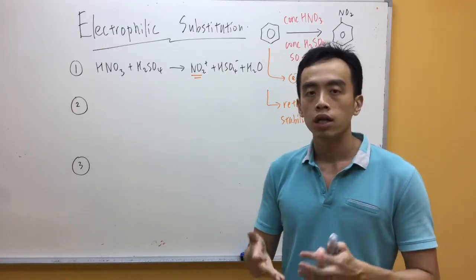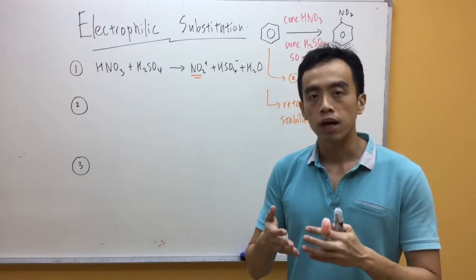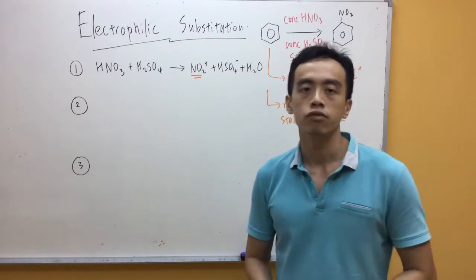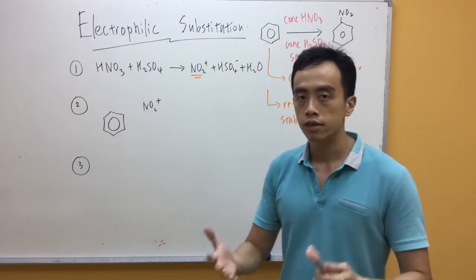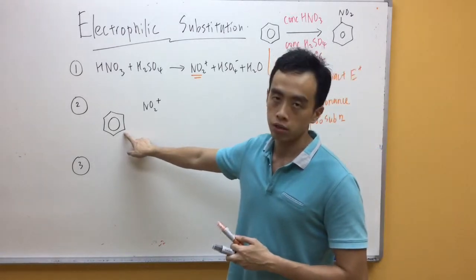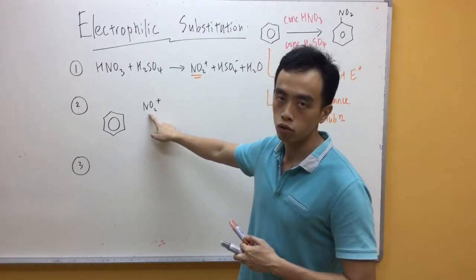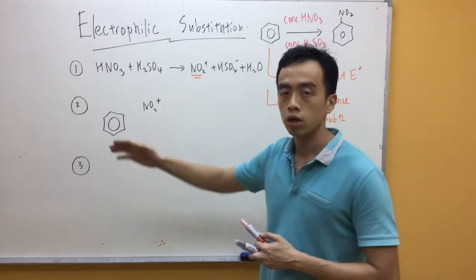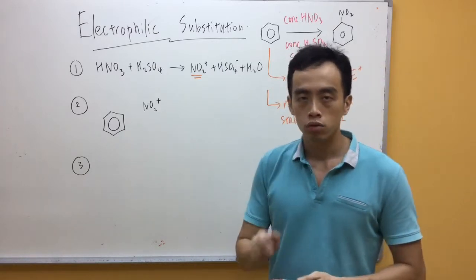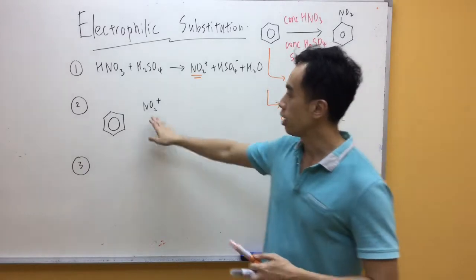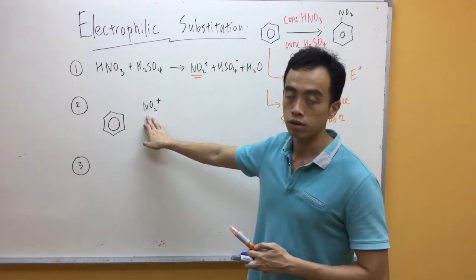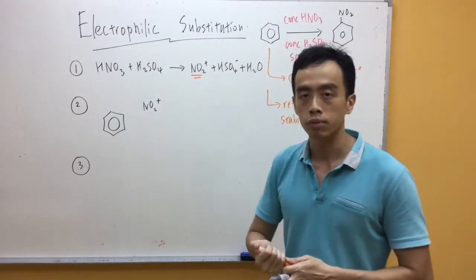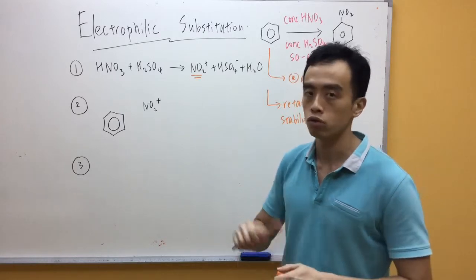And the next step involves the attack of my benzene on the electrophile. Now, if you look at the second step, the benzene ring is electron-rich, my NO2+ is electron-poor. So I can draw an arrow from my benzene ring to nitrogen. Now remember, when I look at NO2+, it is the nitrogen that's positively charged. So when I draw the arrow, I'm going to draw it from the ring to nitrogen, not to oxygen.